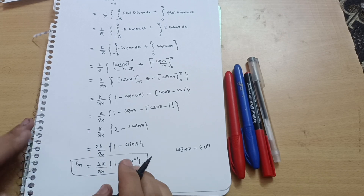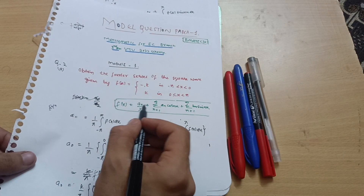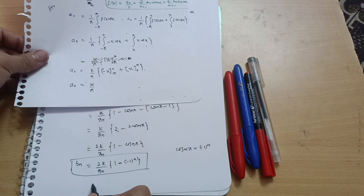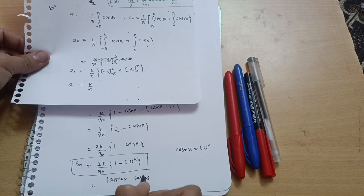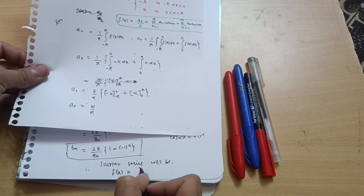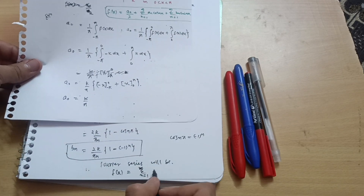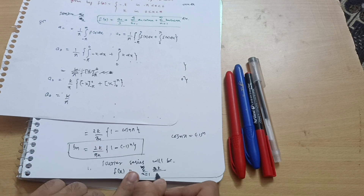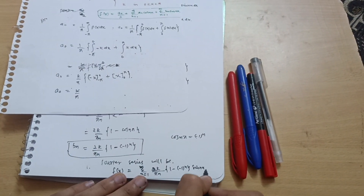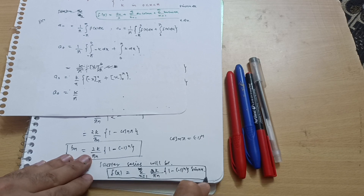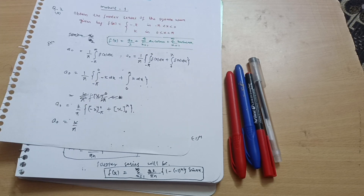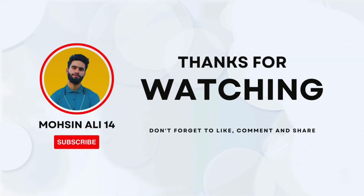Since a₀ = 0 and aₙ = 0, the required Fourier series is: f(x) = Σ (n=1 to ∞) bₙ sin(nx) = Σ (n=1 to ∞) (2k/πn)(1 − (−1)ⁿ) sin(nx). This is the Fourier series expansion for the given square wave. I hope you are enjoying this mathematics series. In the next video, we will see another type of question. Thank you.